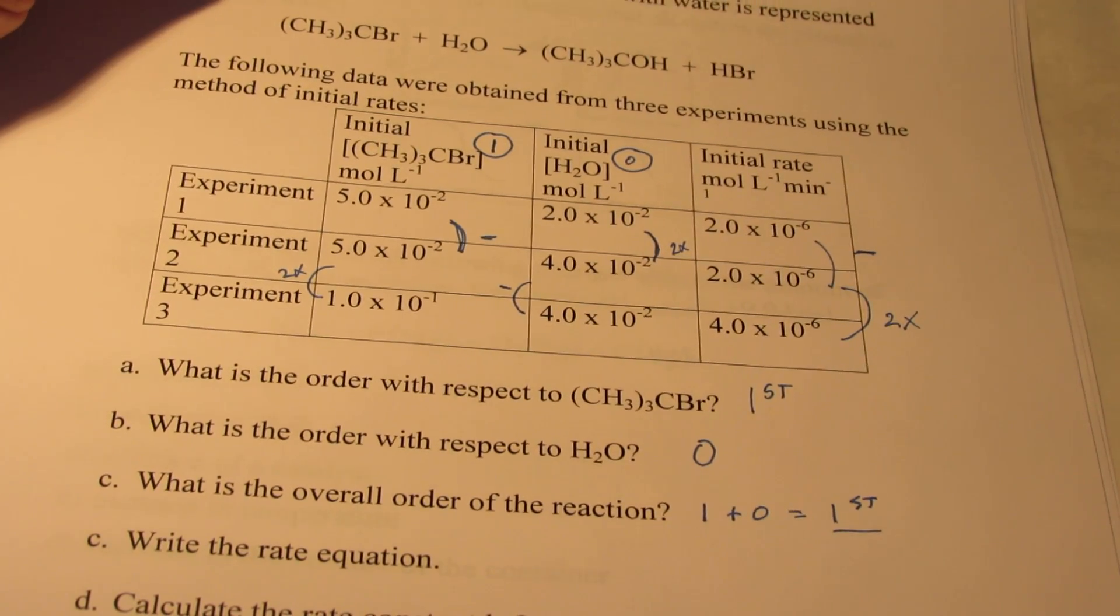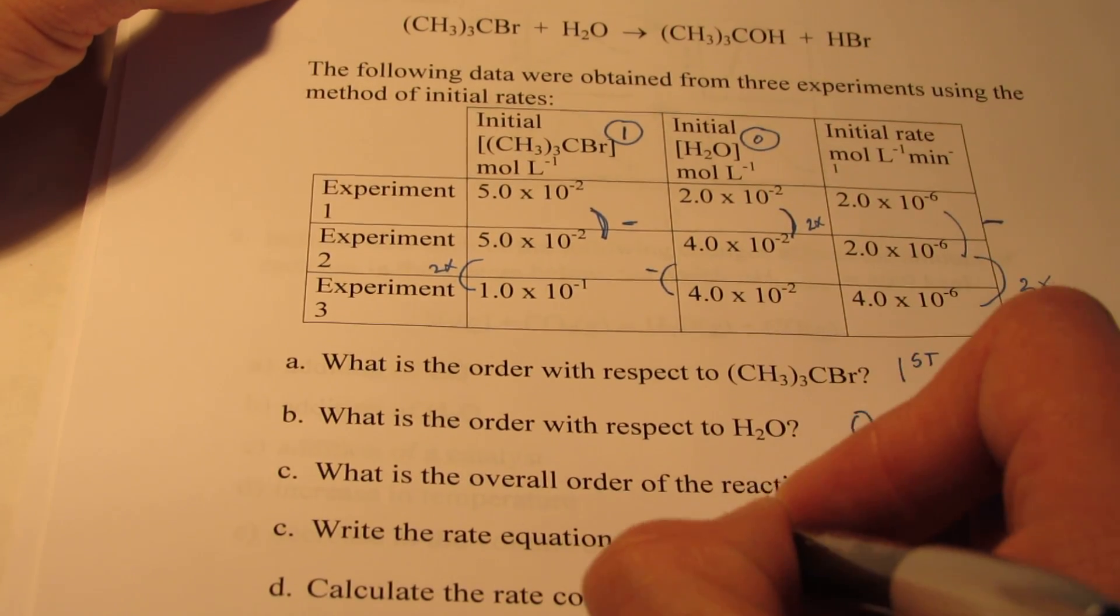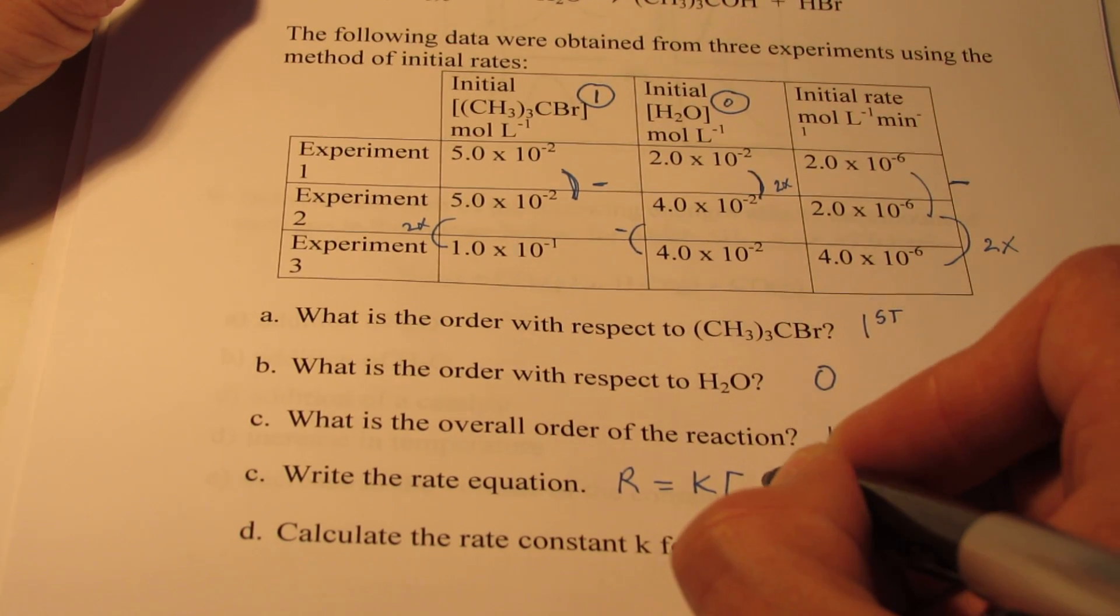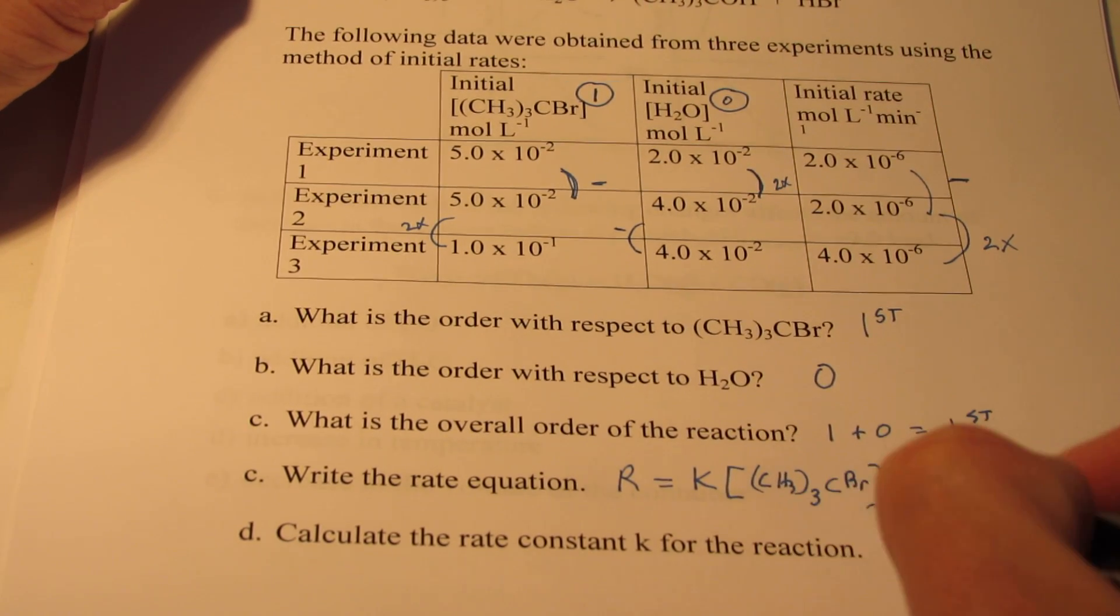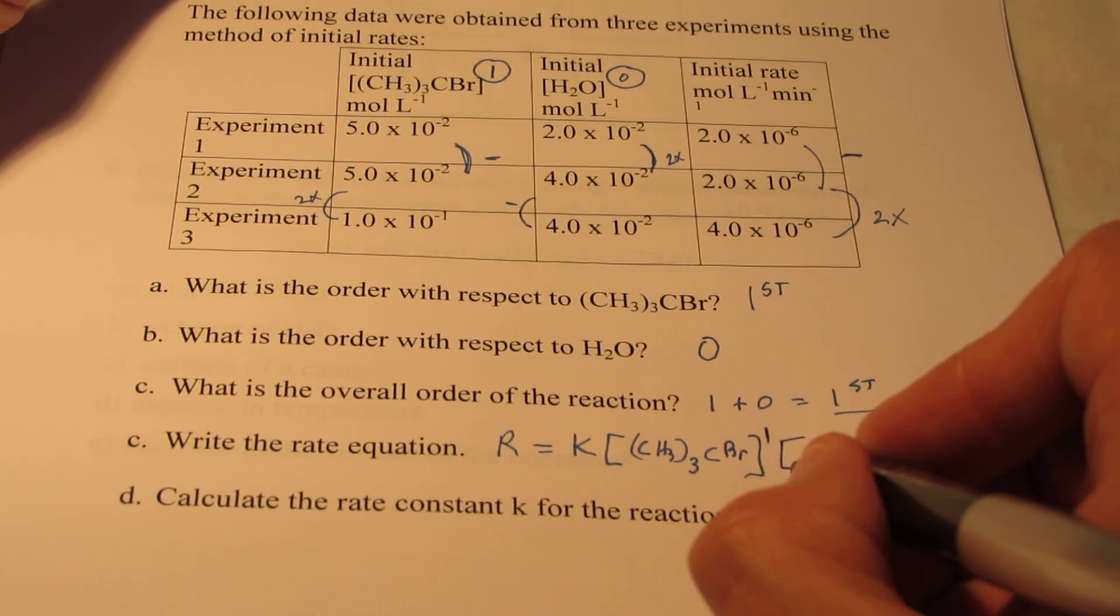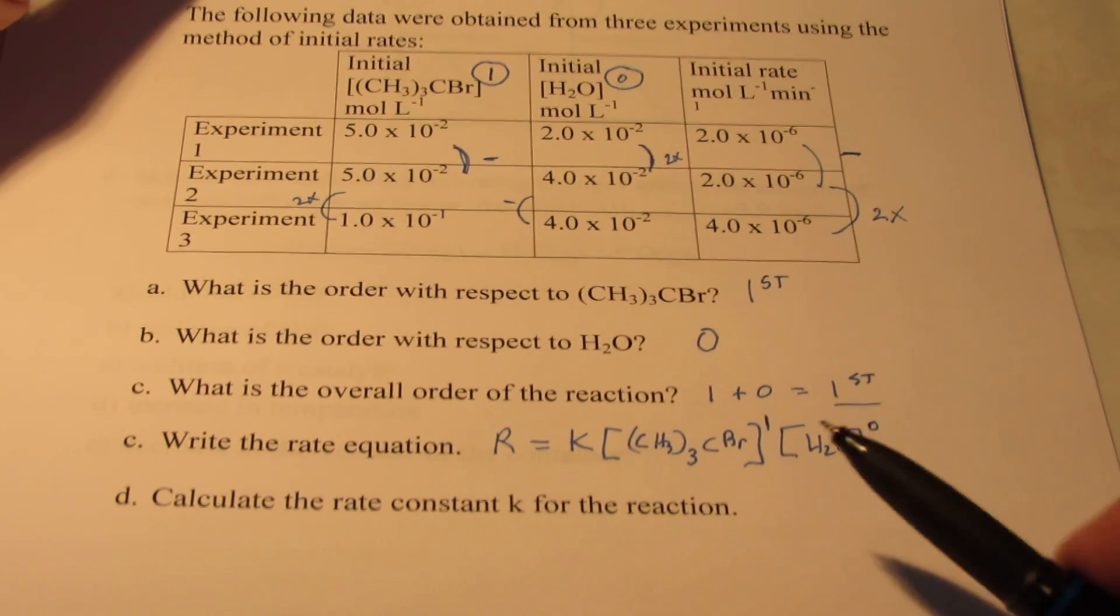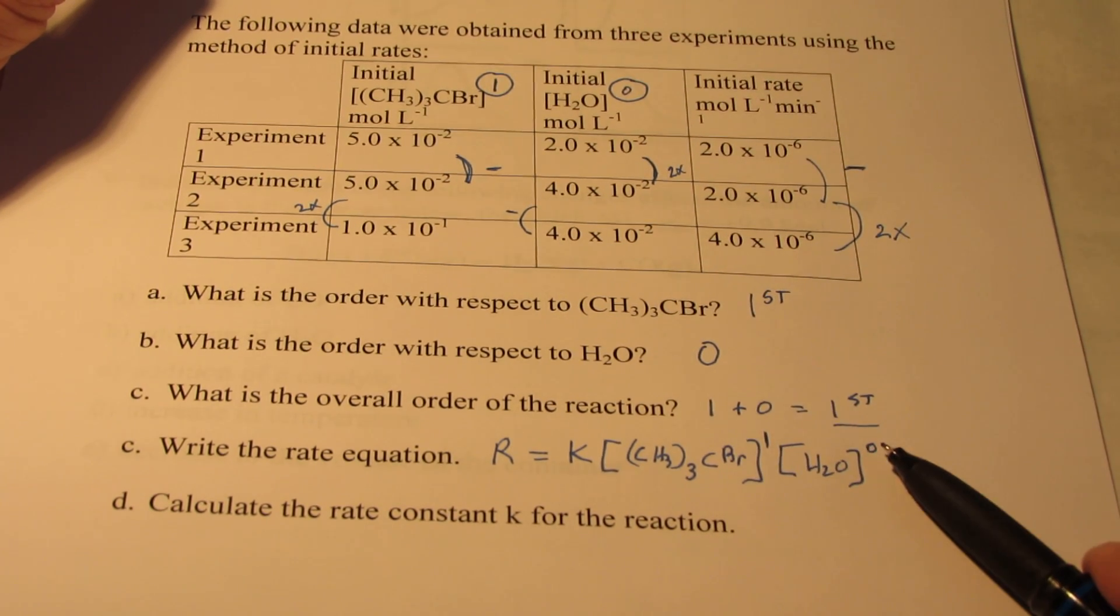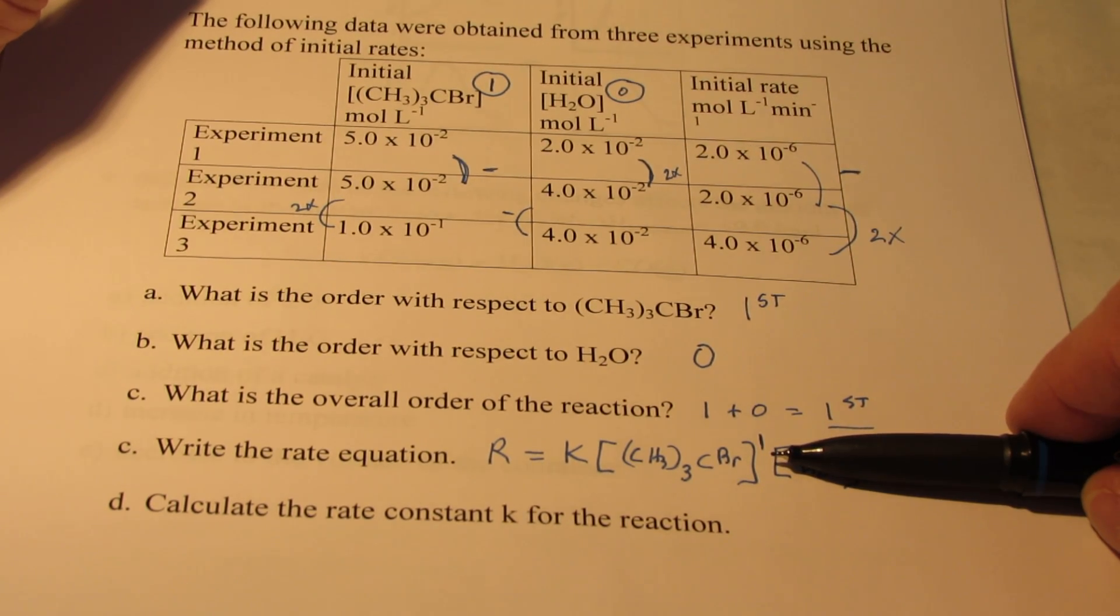Now the overall order is the sum of the individual orders. So one plus zero is first. So the overall order is first order. Now we can write the rate equation, or rate law. Remember, they all begin with R equals K. And then we have our reactant, CH3, and there are three of those bonded to a carbon and a bromine. And that's to the first power. And then the other reactant, H2O, is to the zero power. Now if you ever have a rate law and one of the reactants is to the zero power, that's just like multiplying by one. So if you wanted to leave that off, I would be very happy with that. Either version is okay.